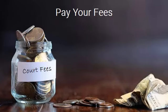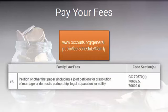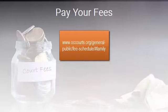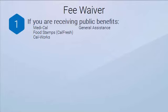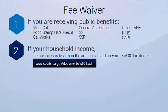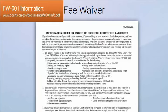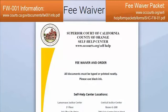In most cases you'll need to pay a fee to file the papers with the court. Orange County Superior Court has its fee schedule at the provided link. Keep in mind your case falls under the dissolution of marriage petition or other first paper. If you cannot afford the fee, you can request a fee waiver. There are three ways to qualify: if you are receiving public benefits such as those listed; if your household income before taxes is less than the amount listed on form FW-001 in item 5b; or if the court finds that you do not have enough income to pay for your household's basic needs and the court fees.